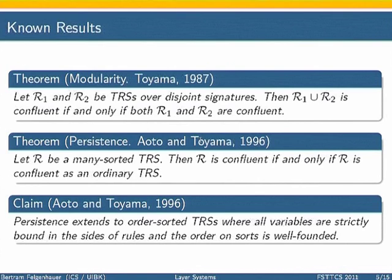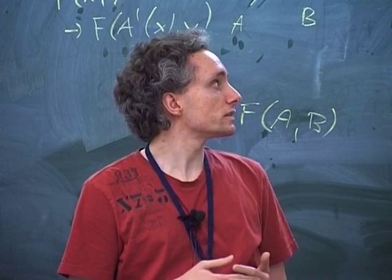Accordingly, for the terms we then allow at argument positions, not only terms of the precise type of that argument, but of any subtype as well. And for rewrite rules, we require that the right-hand side is of the same type as the left-hand side, or of a more specific type. One final technical definition. In this case, for order-sorted TRSs, we say that a variable in a term is strictly bound if it exactly matches the required argument type of the function where it occurs.